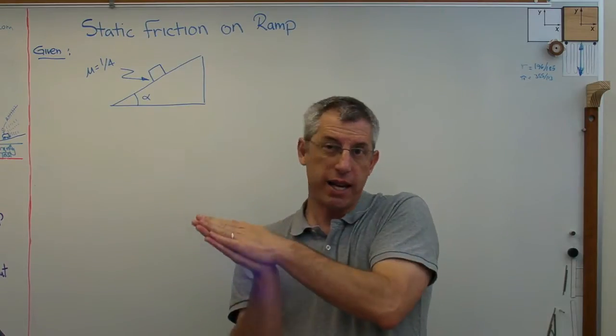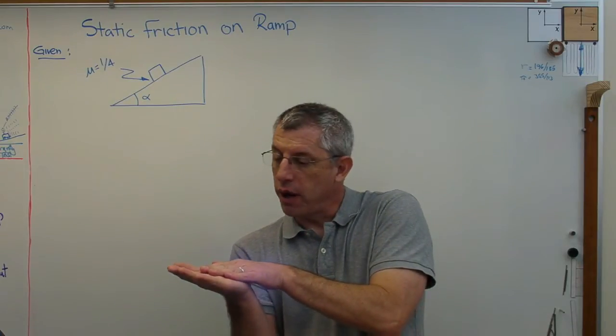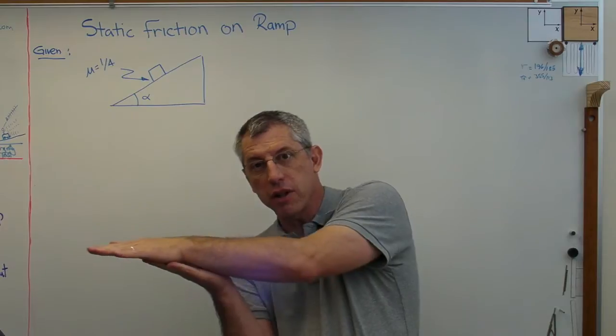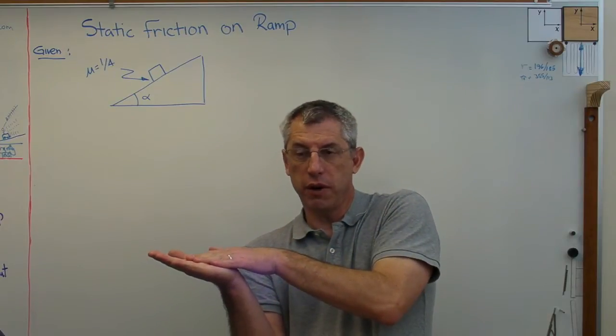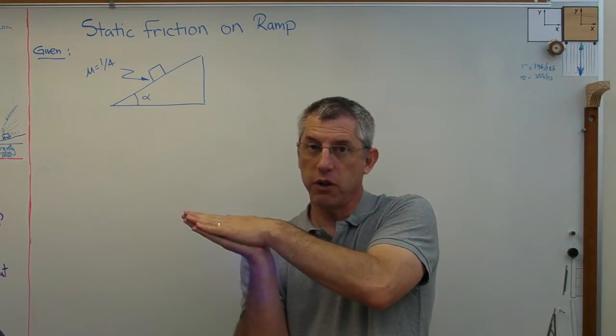There's actually static and dynamic friction, and for a lot of materials, those are actually different numbers. If an object is sliding across another, there's one friction coefficient, and if they're static, not moving with respect to one another, there's a different friction coefficient.